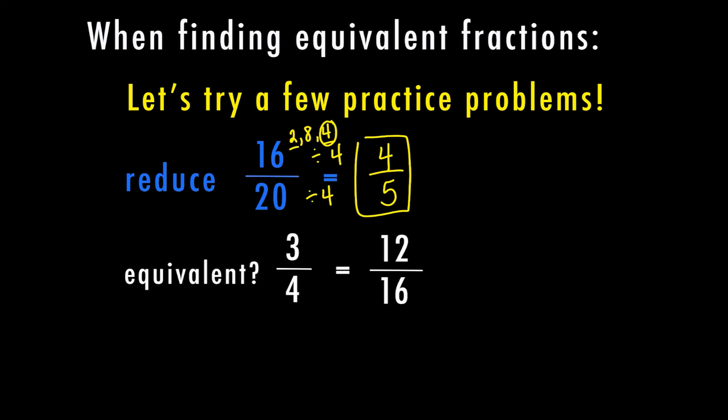For example 2, we want to know if these two fractions are equivalent. We need to check whether the numerator and denominator multiply by the same number to get the new fraction. 3 goes into 12 four times, so we're multiplying by 4. And 4 times 4 on the bottom equals 16. So yes, these are equivalent.